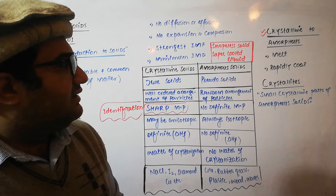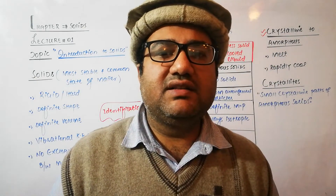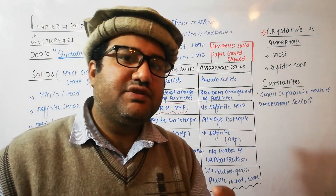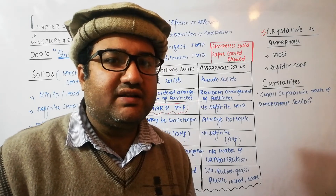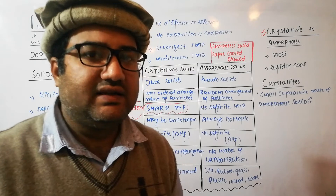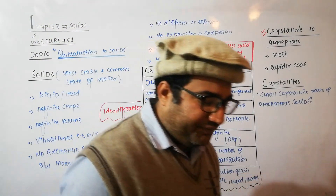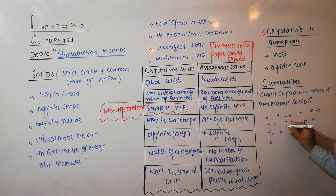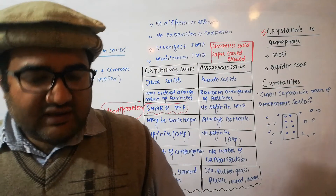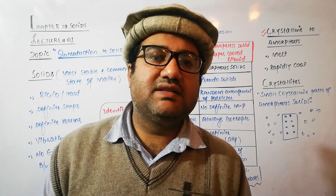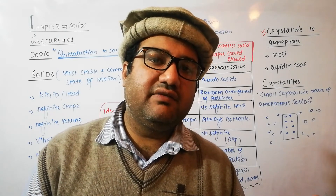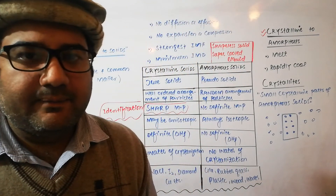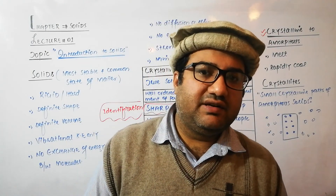What are crystallites? In amorphous solids, we do not find a well-ordered arrangement of particles in three dimensions, but there are some small regions where there is an ordered arrangement of particles — those small parts are called crystallites. For example, in an amorphous solid having a disordered arrangement of particles, a small area with a well-ordered arrangement would be identified as a crystallite. This concludes the introduction to solids, covering general properties, the difference between crystalline and amorphous solids, conversion between them, and crystallites. In the next lecture, we will discuss the properties of crystalline solids.